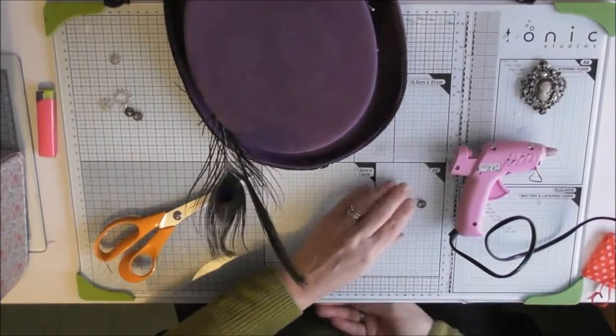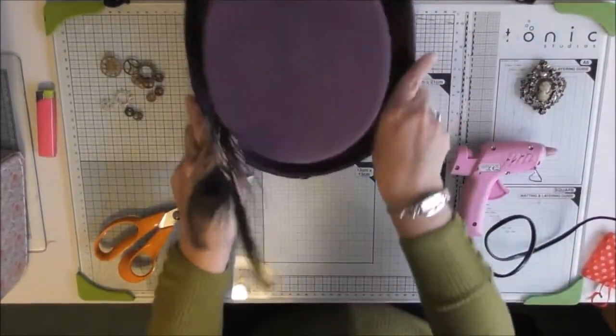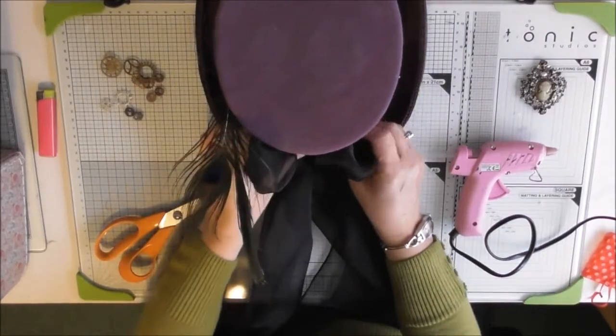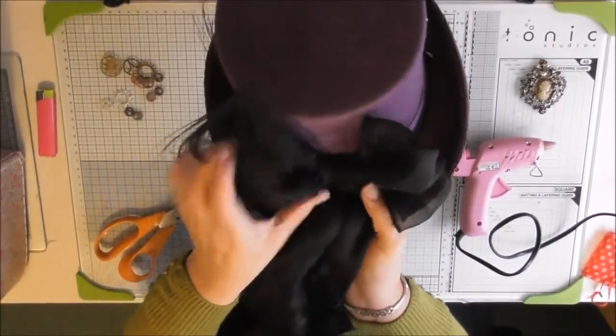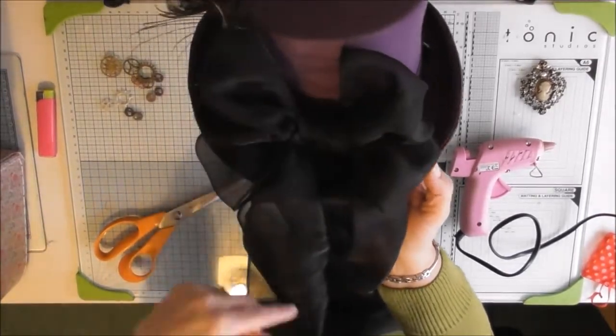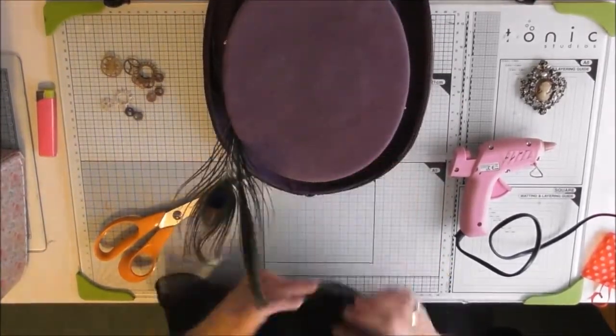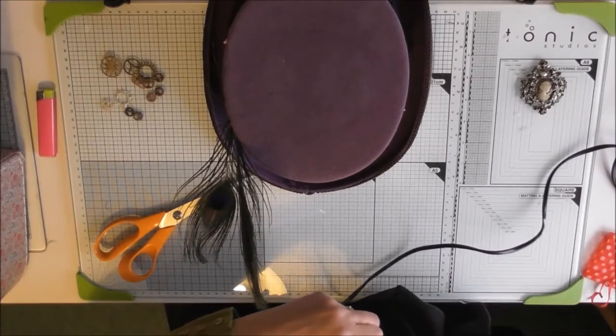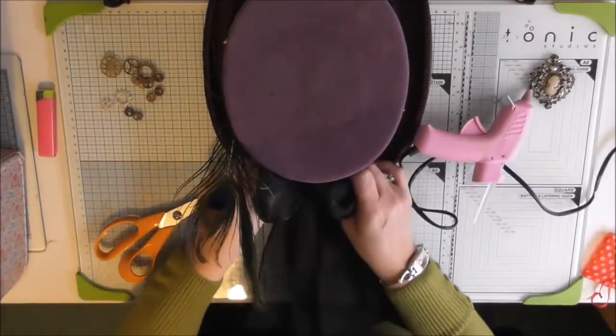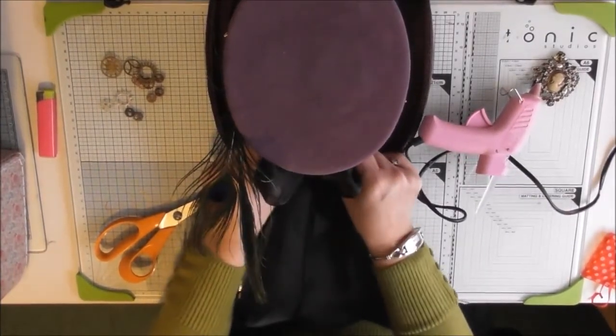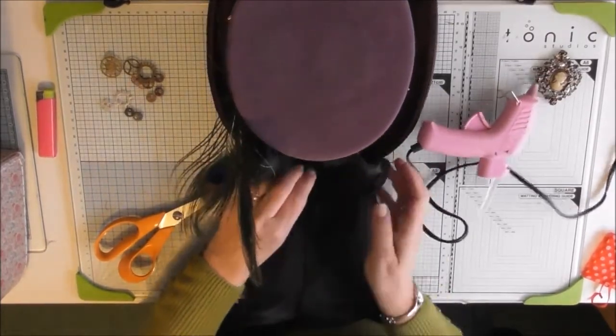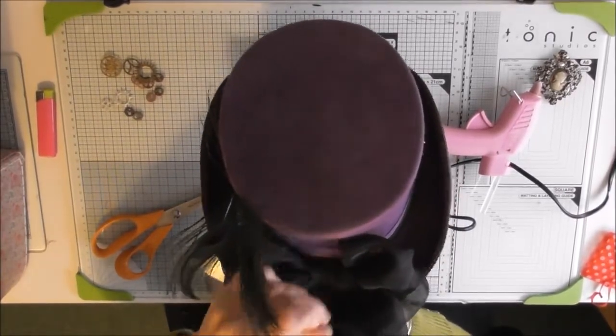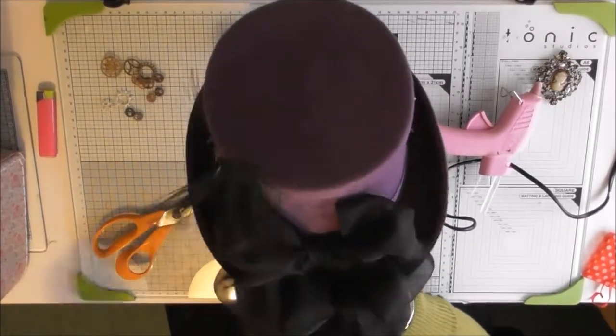I'm going to add it so that this trails down so I've got a nice trail at the back. So now I'm going to add my organza bow at the back. Here we are.